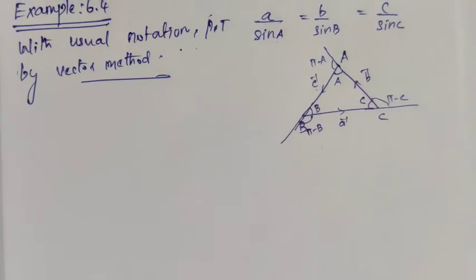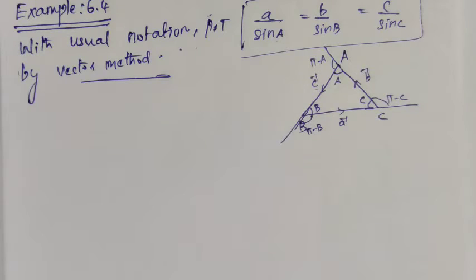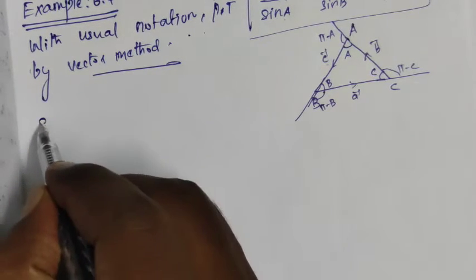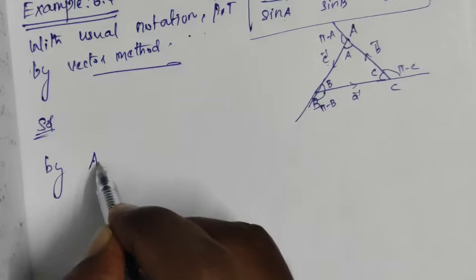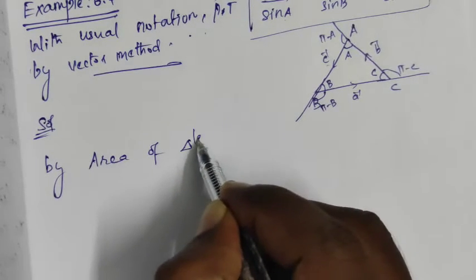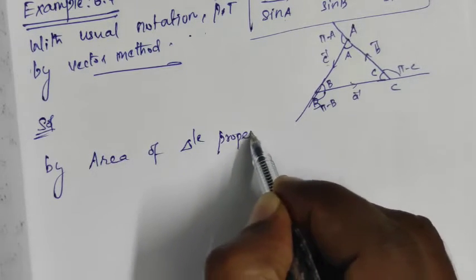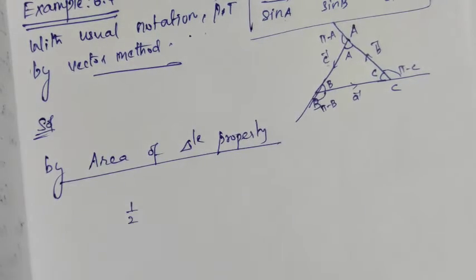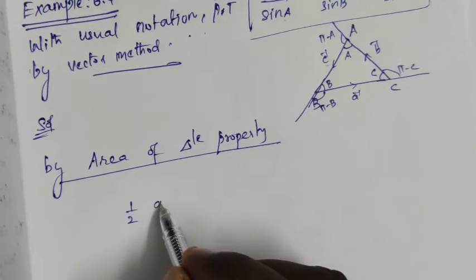Now, we will go directly to the solution using the area of triangle property. We will use the area of triangle formula: area equals half times A vector cross B vector.